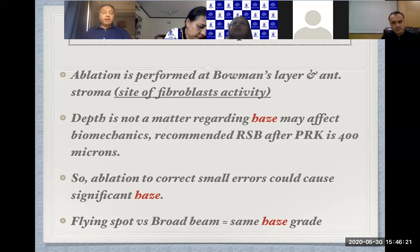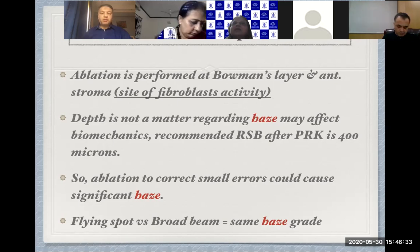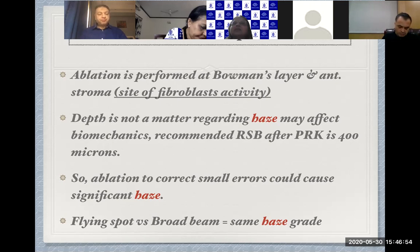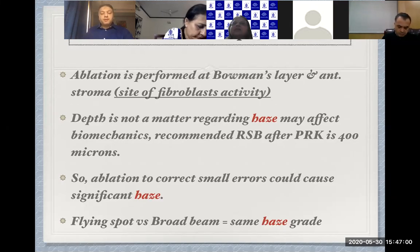I recall a case of just -1.5 D myopia treated by surface ablation for something suspicious in the anterior sagittal curvature. Because the error was very small, I did not use mitomycin C in that case, and the patient developed severe, intractable haze that took a very long time to resolve. Also, the flying spot laser has a much lower incidence of haze compared to the broad beam.